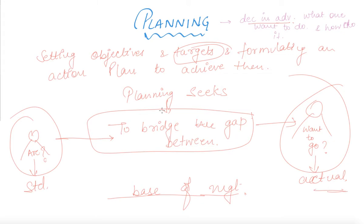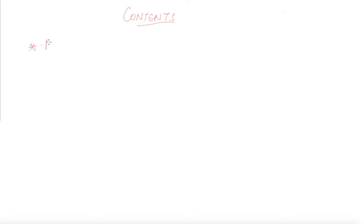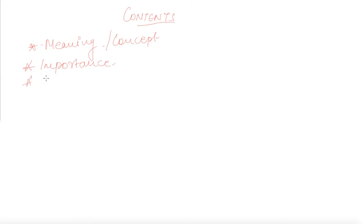After discussing the meaning of planning, let us discuss what we are going to learn under this chapter. First is the meaning or concept of planning. Secondly, just like everything has advantages and disadvantages, we will learn about its importance. And since it has importance, it must have some limitations as well, so we will cover limitations of planning.